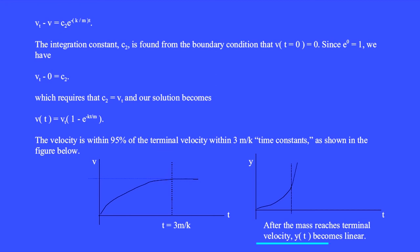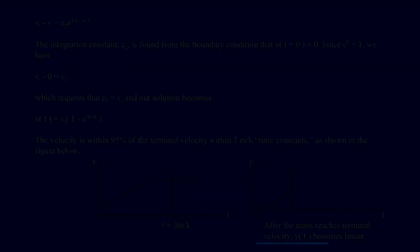To get the height as a function of time, we integrate again. We have dy dt equals v equals v terminal times 1 minus e to the minus kt over m. Moving the differential dt to the right side of the equals sign and integrating, we get y equals the terminal velocity multiplied by t plus m over k e to the minus kt over m plus c, where c is the integration constant.